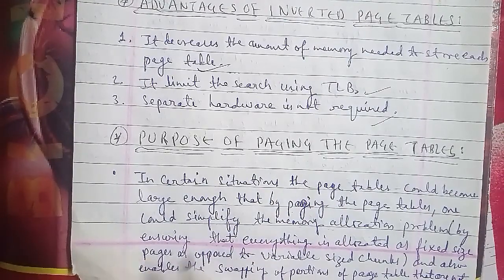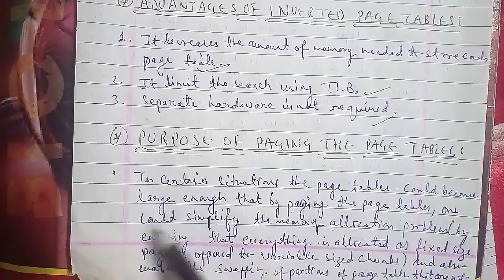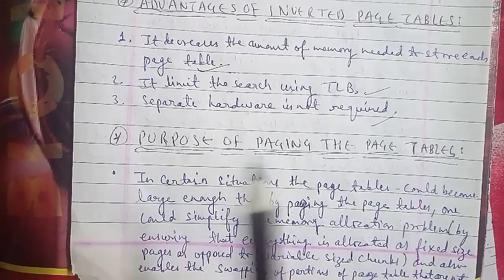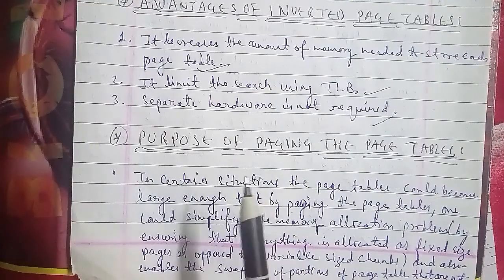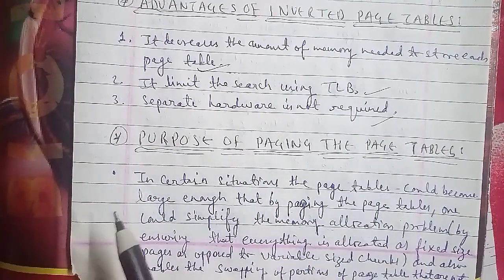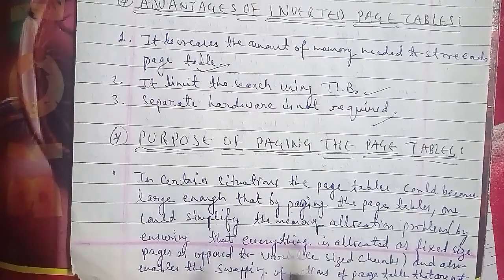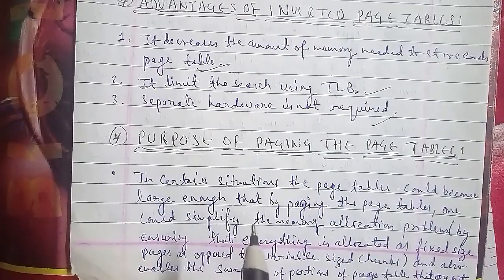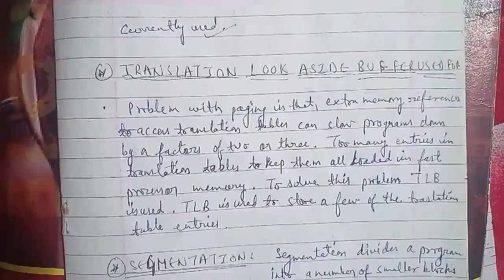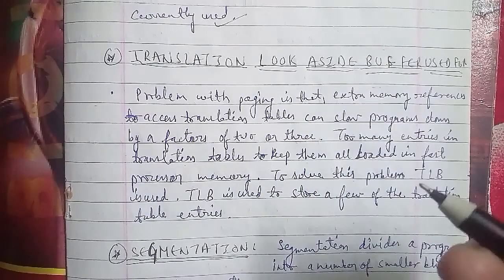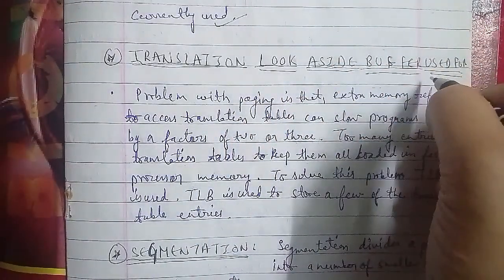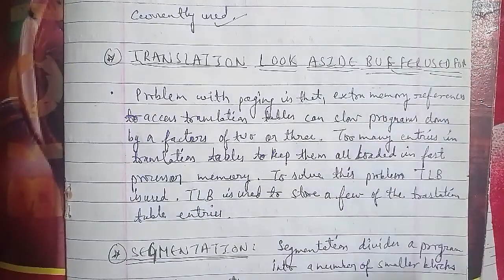Translation Lookaside Buffer (TLB): the problem with paging is that extra memory references to access the translation table can slow a program down by a factor of 2 or 3. There are too many entries in the translation table to keep them all loaded in fast processor memory. To solve this problem, TLB is used to store a few of the translation table entries.